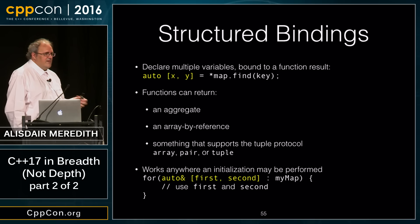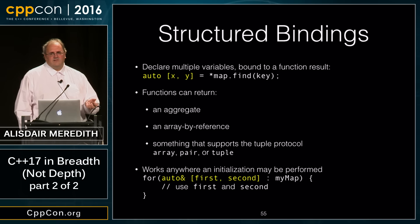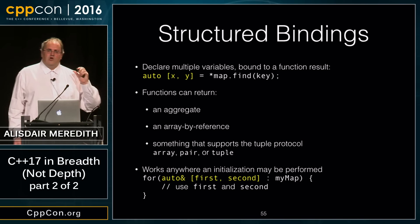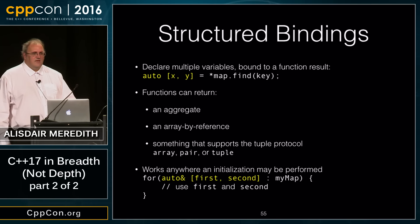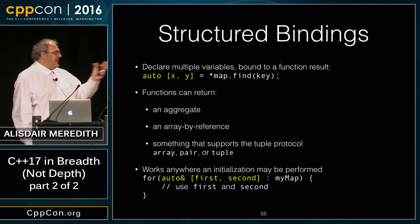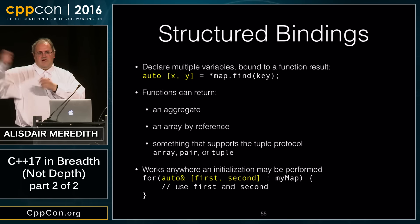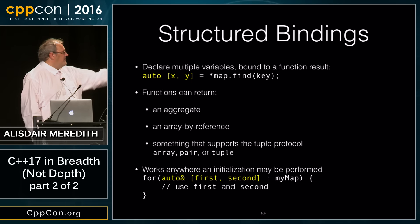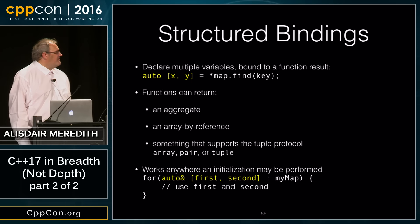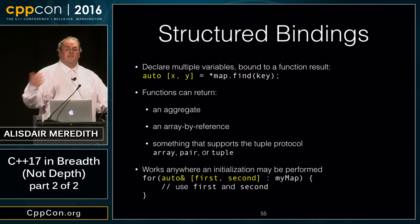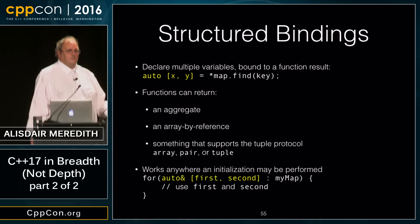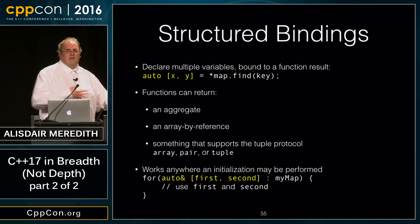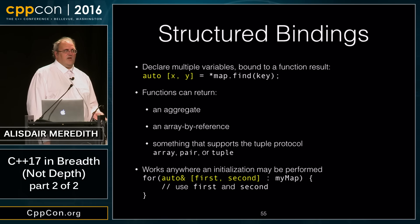The idea is you provide specializations for tuple_size, tuple_element, and the get function to retrieve elements out of the tuple. Array, pair, and tuple already support those types out of the box — we just haven't given users the rules for how to customize their own types to specialize those traits.